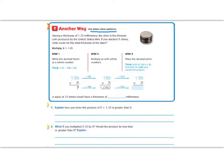So we are being asked to multiply 1.35 times 8. So step 1 says write the decimal factor as a whole number. So it says instead of writing 1.35, I'm going to multiply that by 100, and I'm just going to get 135, and we're going to leave the 8 alone.